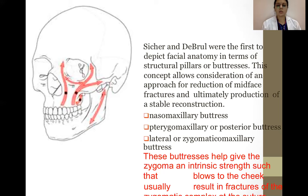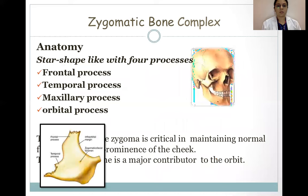These buttresses help give the zygoma an intrinsic strength. The zygomatic bone complex anatomy is star-shaped with four processes: the temporal process, frontal process, maxillary process, and the orbital process.